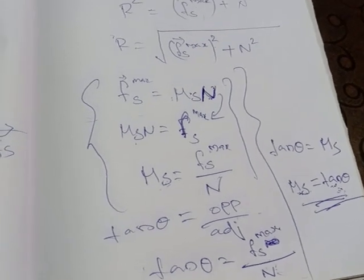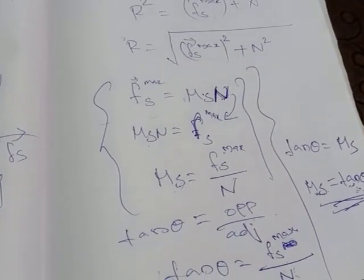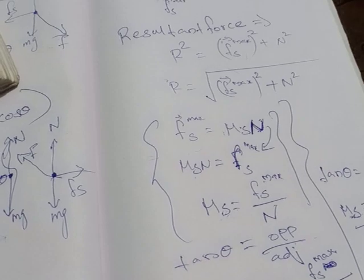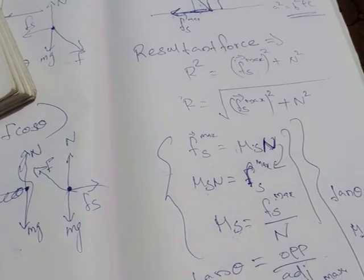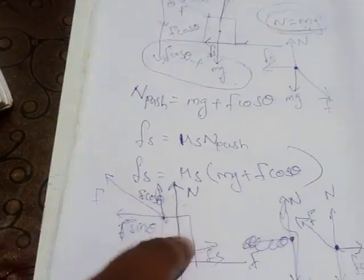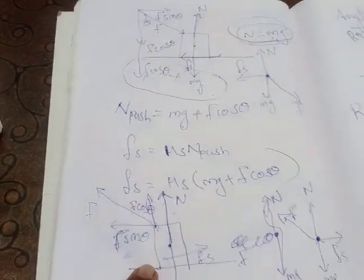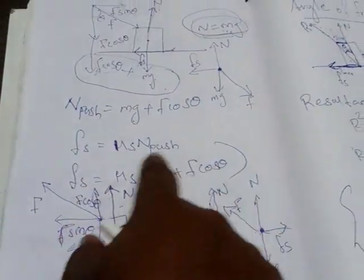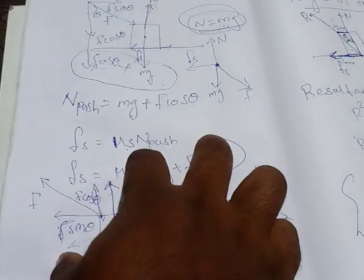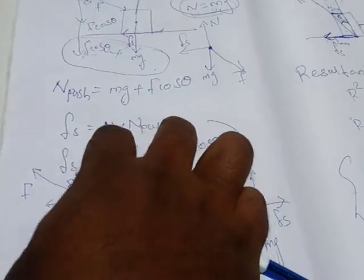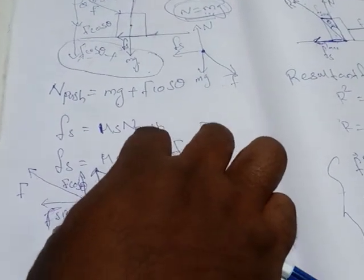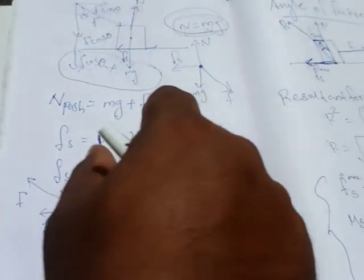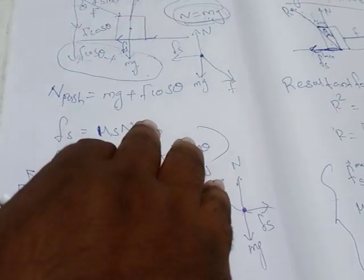This angle of friction derivation is an important three-mark question. Moving an object — pushing or pulling which is easier — is also a very important three-mark question. This is today's assignment; submit it this week, ask your doubts during the Zoom class time. Thank you all, bye.